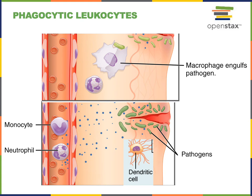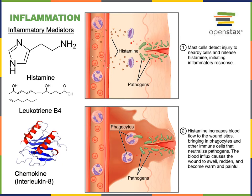All neutrophils, monocytes, macrophages, and dendritic cells are capable of performing phagocytosis to engulf pathogens. Inflammation is a response triggered whenever body tissues are injured or whenever an infection is detected. There are four cardinal signs of inflammation: redness, swelling, heat, and pain. The redness and heat are a result of increased blood flow to the tissue. Swelling is in part a result of increased blood flow and also increased vascular permeability, which increases the amount of fluid that leaks from the blood plasma into the interstitial space.